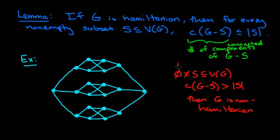So in other words, if there exists this S with this property, then we know the graph is non-Hamiltonian. So take a look at this graph, maybe pause the video and take a good look at it, see if you can find the set S that will do this for you.